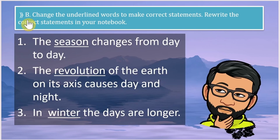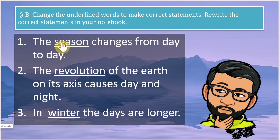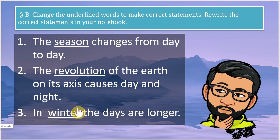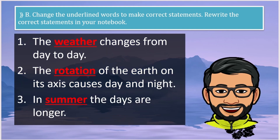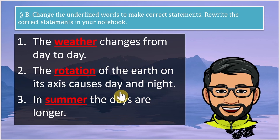Question B: change the underlined words to make correct statements and rewrite them. First: 'The season changes from day to day' — the correct statement is: the weather changes from day to day. Second: 'The revolution of the earth on its axis causes day and night' — it should be rotation, not revolution. Third: 'In winter the days are longer' — it should be in summer the days are longer.